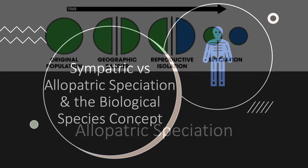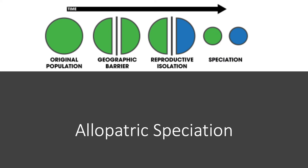So, allopatric speciation. The most notable feature of allopatric speciation is the presence of a geographic barrier. That is what is going to tell us that allopatric speciation has occurred instead of sympatric, which we will get into in a bit. If we start off with that green circle on the left — our original population — at some point in time a geographic barrier presents itself, splitting the two into two groups.